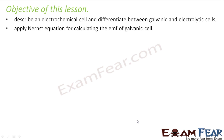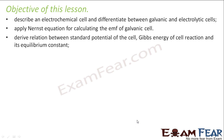We'll learn the Nernst equation and try to apply it to find the EMF of a galvanic cell. We'll derive the relationship between the standard potential of the cell, the Gibbs free energy of the cell reaction, and its equilibrium constant. There is a relationship between the standard potential, the Gibbs energy, and the equilibrium constant, and we'll derive that.